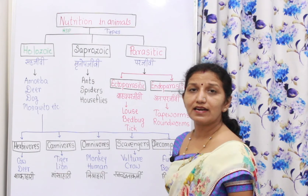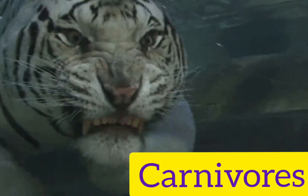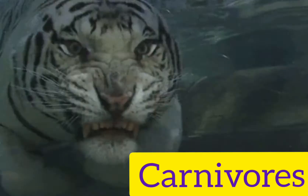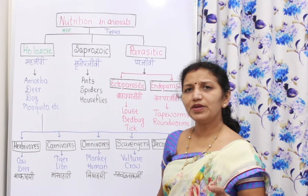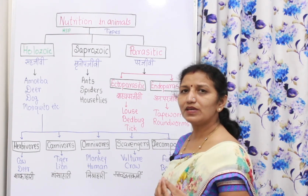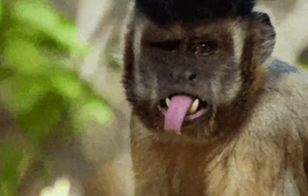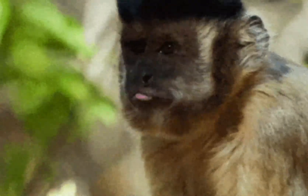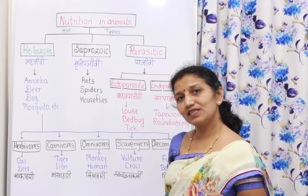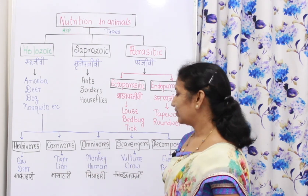Carnivorous — 'carn' is the prefix that stands for flesh or meat. Carnivorous animals are tiger and lion, called mounsahari prani. They nourish themselves by eating the flesh of other animals. Then omnivorous means misrahari — they are both herbivorous and carnivorous. For example, some human beings eat plants as well as flesh, and monkeys also eat fruits, vegetables, and flesh. That's why they are called omnivorous.